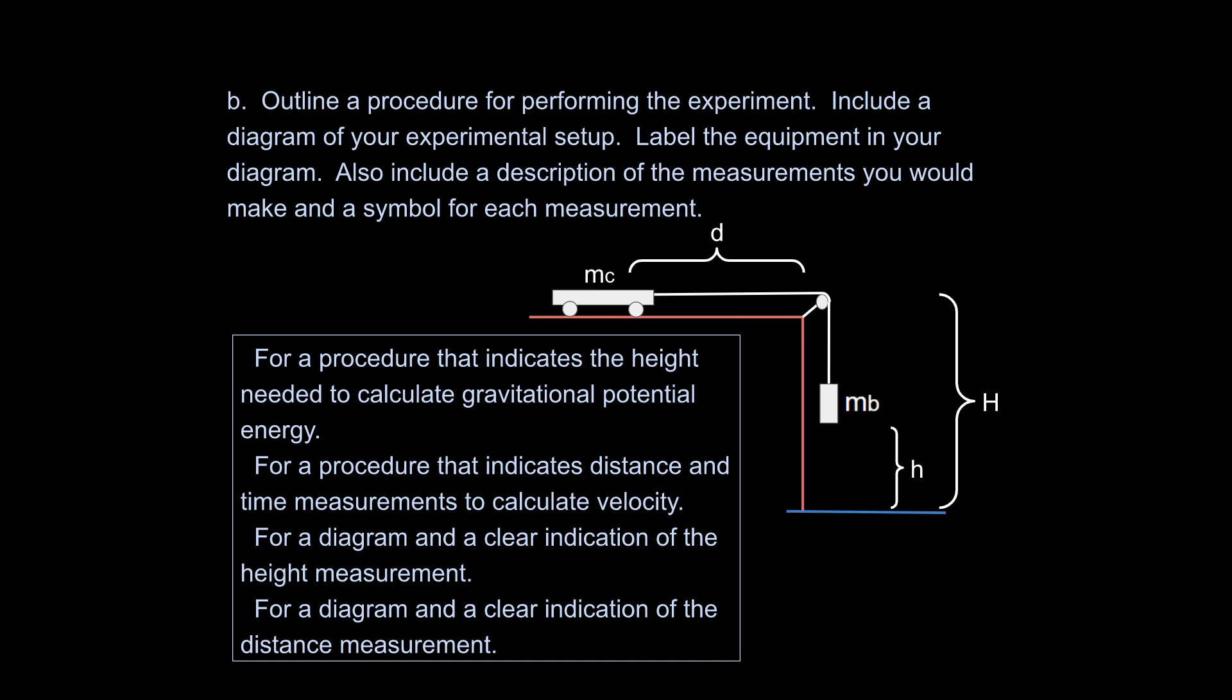So it says for a procedure that indicates the height needed to calculate gravitational potential energy, indicates distance and time measurements to calculate velocity, diagram and clear indication of the height measurement, diagram, clear indication of distance measurement. So distance is important here in this diagram. And that does feed into where they are taking this. This isn't purely a conservation of energy problem, even though it is set up that way and seems to be that way, and they kind of tell you it is. It actually uses some kinematics as well. And that's why they're stressing this D value right here, this distance that it moves.